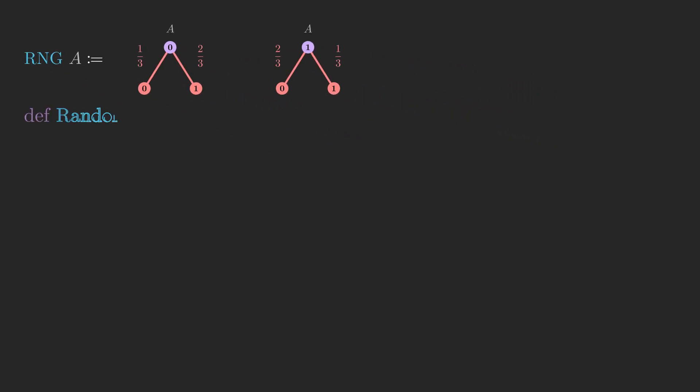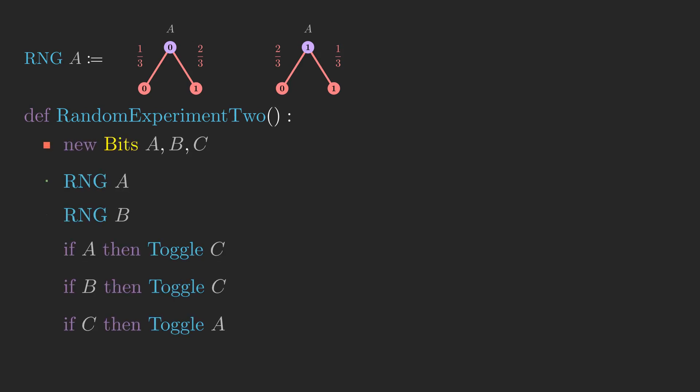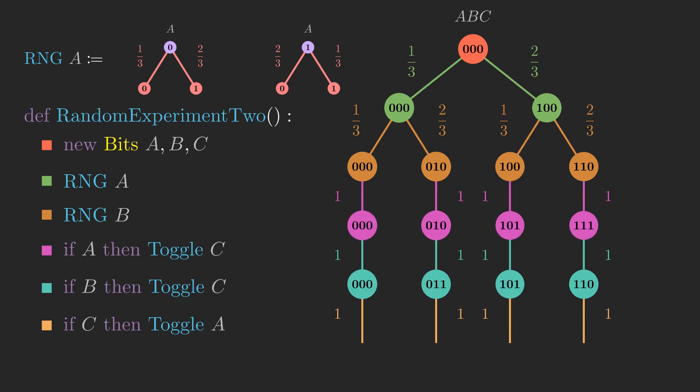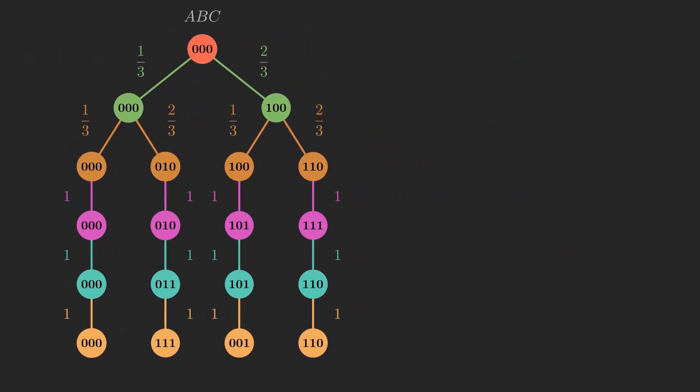Let's look at a slightly more complicated example. In this example, let's say we want to know the probability that the last bit of the output, C is one. To do this, we add together these products of probabilities for each branch that leads to a final state where C is one.